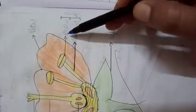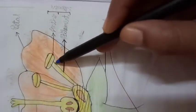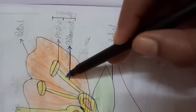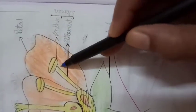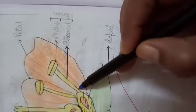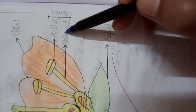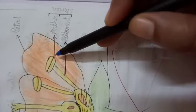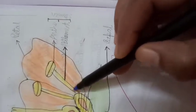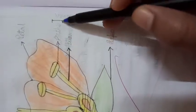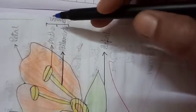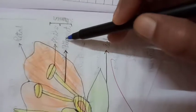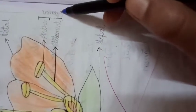After petal, you write about this part. This upper part is called anther and this stalk-like lower part is called filament. And these both the parts comprises a single word, stamen. Means both the parts when combinedly we can call, that is called stamen.